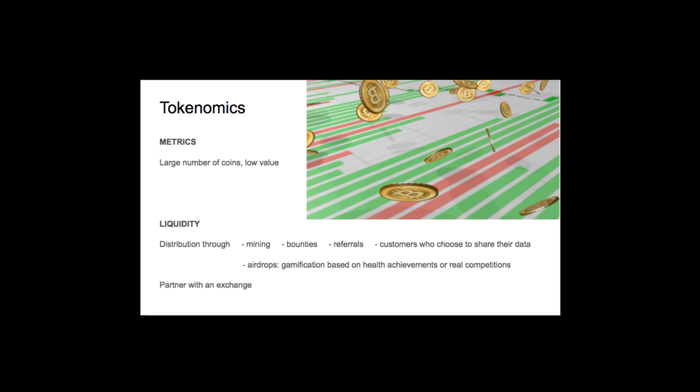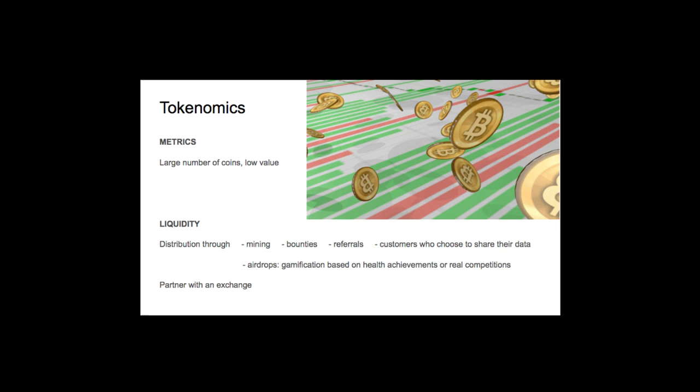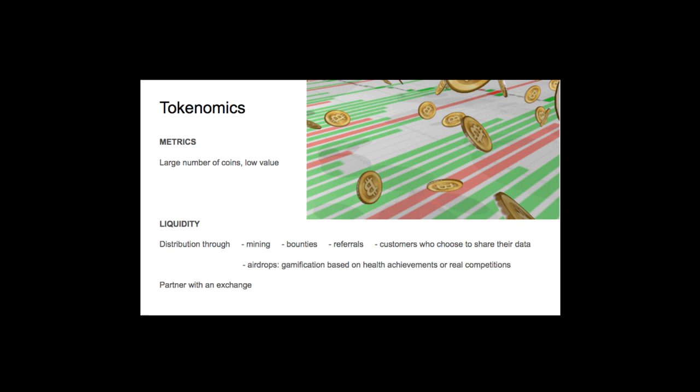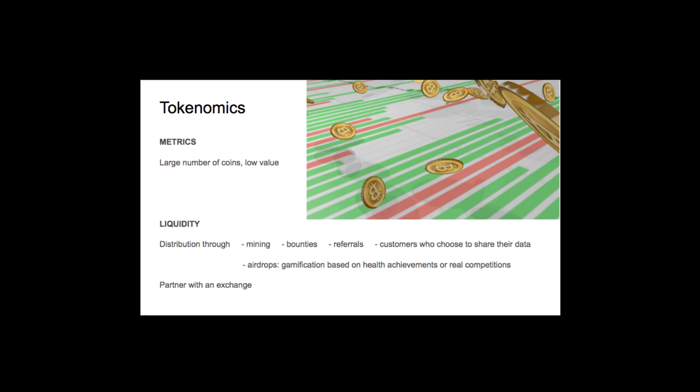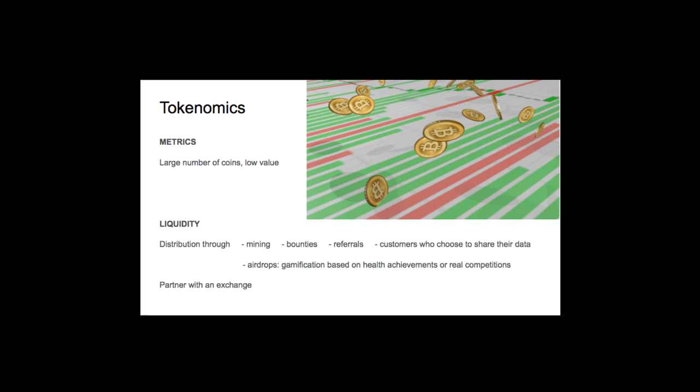Liquidity is key to ensure a healthy network. To promote it, Phoenix relies on different distribution channels. The traditional mining and bounties will allow anyone to get involved in our system and be rewarded in tokens. Customers who choose to share their data will also be rewarded in tokens. Finally, tokens will be airdropped through a gamification process based on health achievements or real-life competitions.